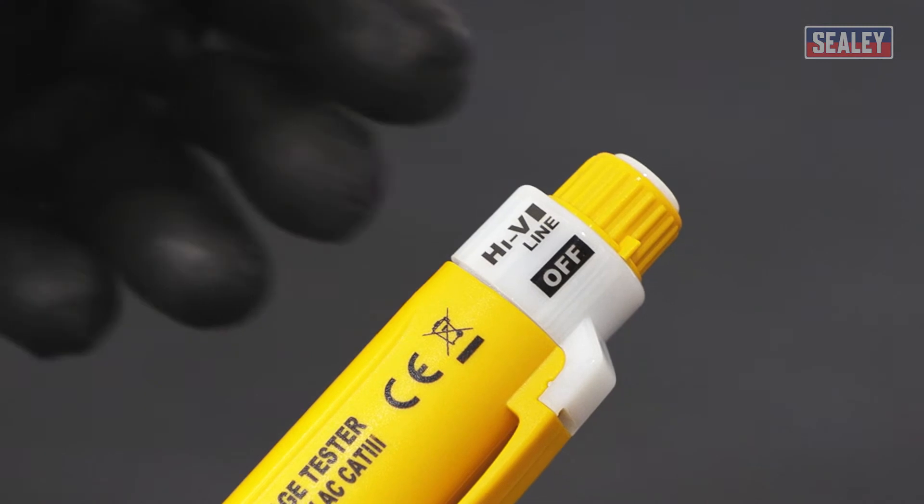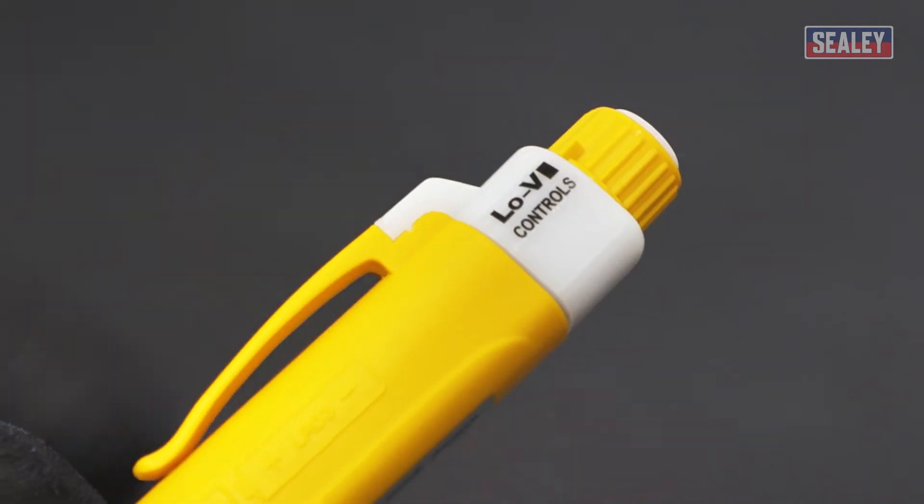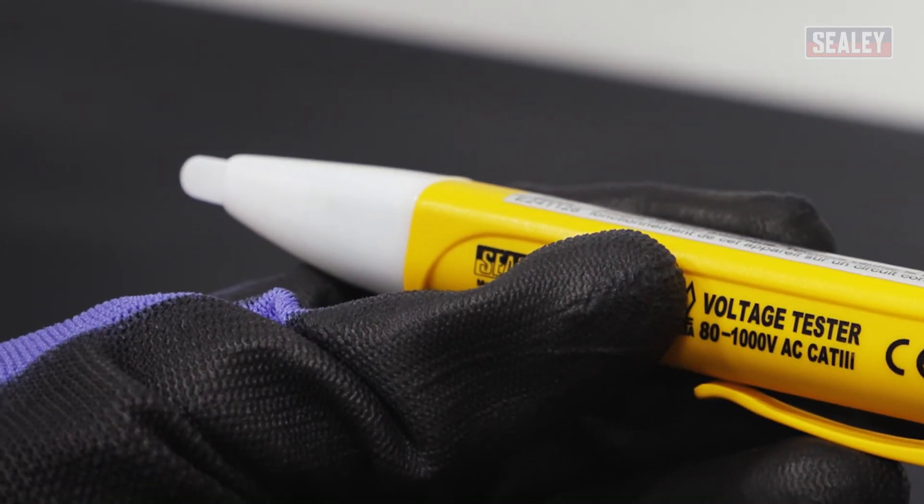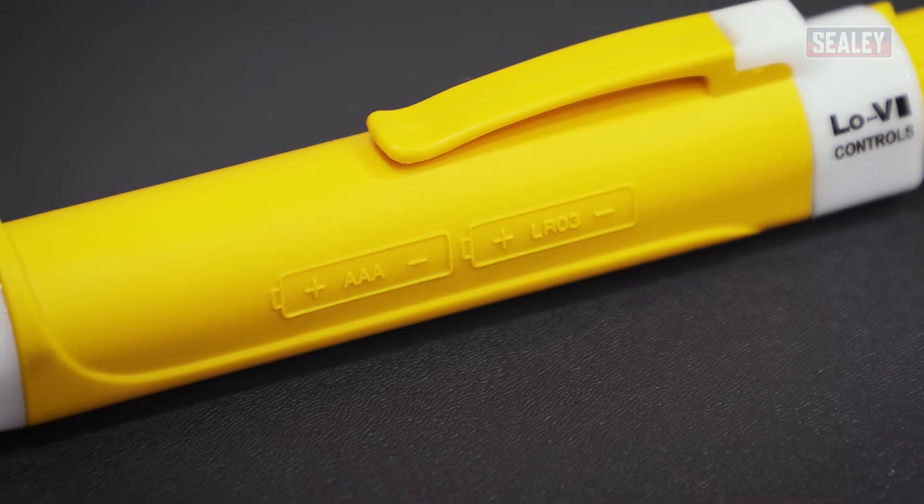Turn the unit on by rotating the switch to either the high or low voltage sensitivity settings. The green LED will flash once and give an audible beep. This indicates that the batteries are functioning correctly.